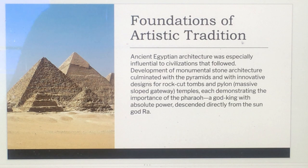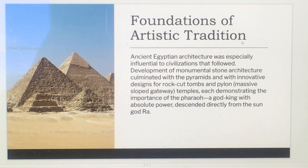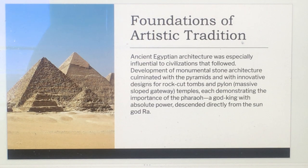Ancient Egyptian architecture was especially influential to civilizations that followed. Development of monumental stone architecture culminated with the pyramids and with innovative designs for rock-cut tombs and pylons — massive sloped gateway temples — each demonstrating the importance of the Pharaoh as a god-king with absolute power, descended directly from the sun god Ra.